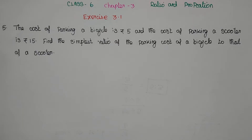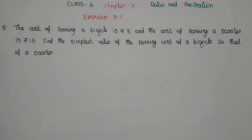Now we are going to solve Problem Number 5. The cost of parking a bicycle is Rs. 5 and the cost of parking a scooter is Rs. 15. Find the simplest ratio of the parking cost of a bicycle to that of a scooter.